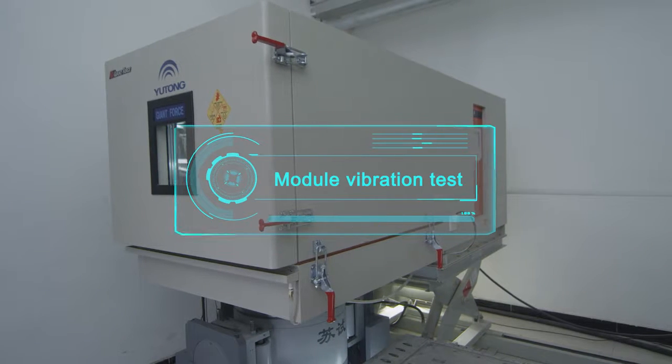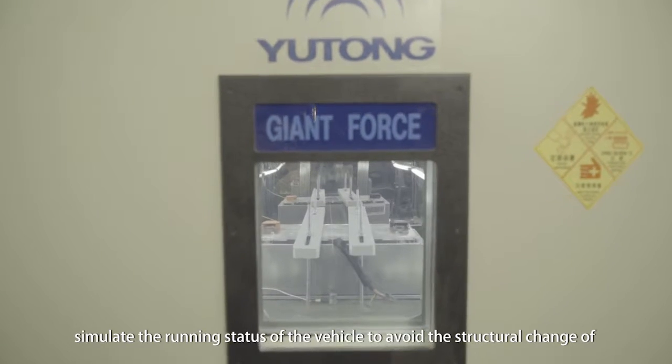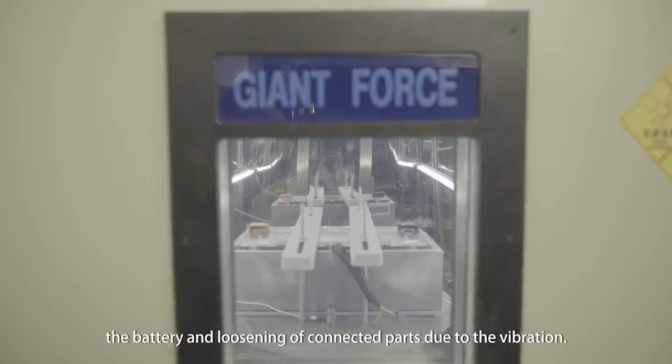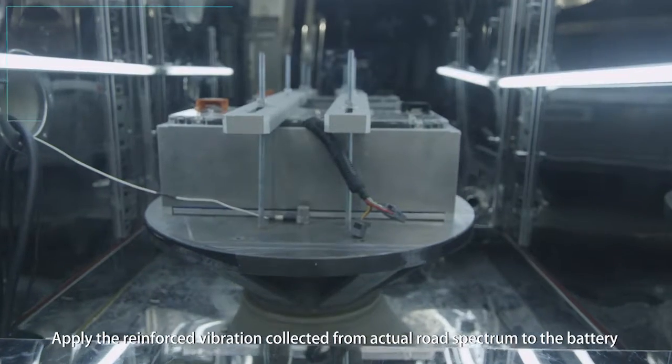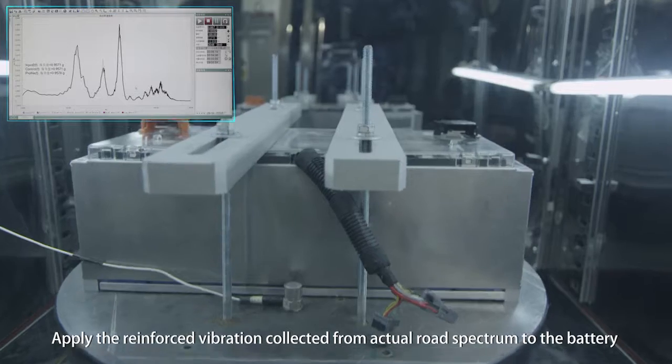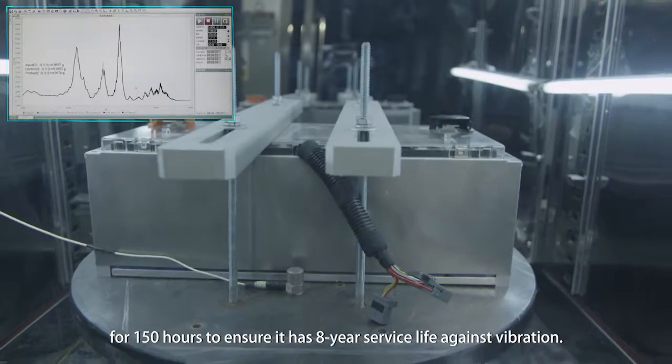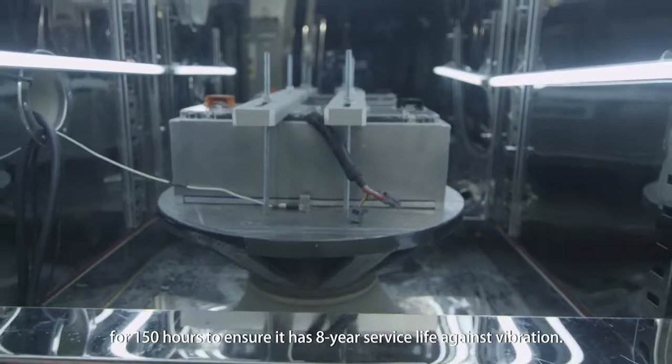Module vibration test. Simulate the running status of the vehicle to avoid the structural change of the battery and loosening of connected parts due to the vibration. Apply the reinforced vibration collected from actual road spectrum to the battery for 150 hours to ensure it has an 8-year service life against vibration.